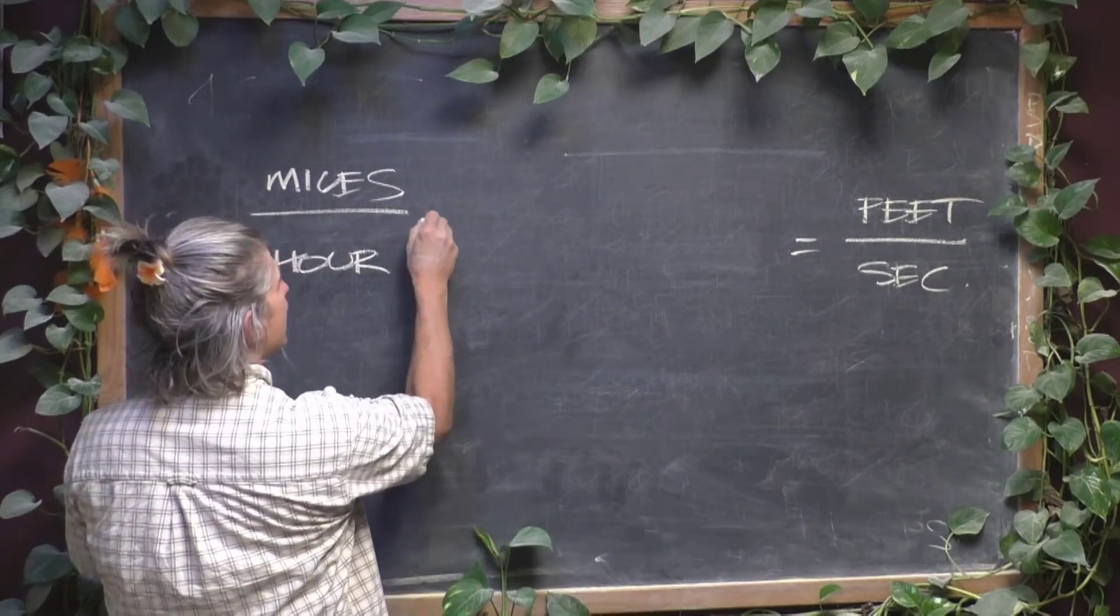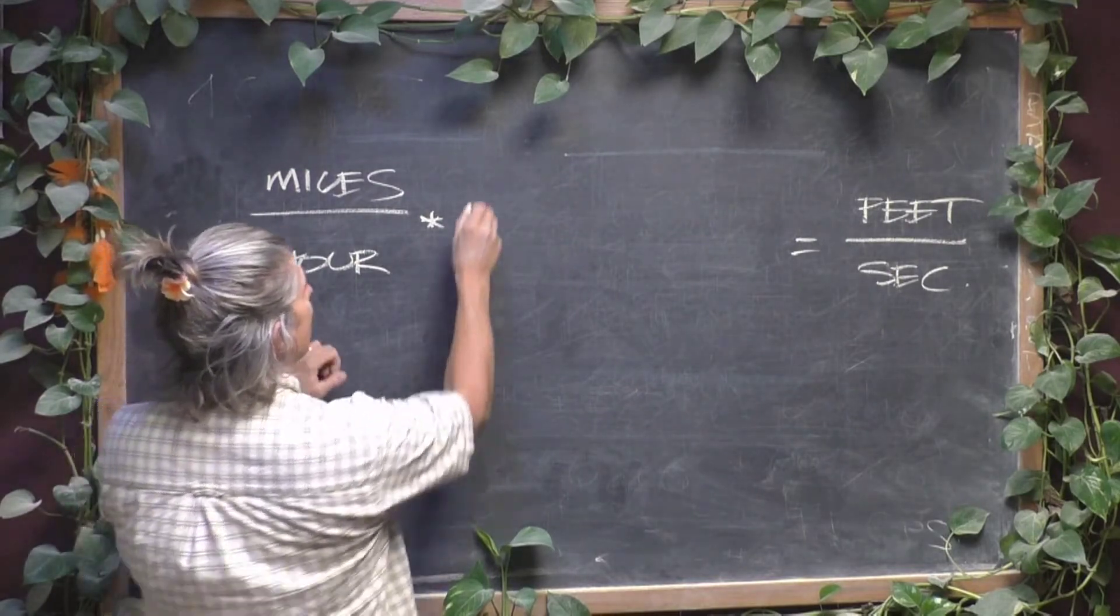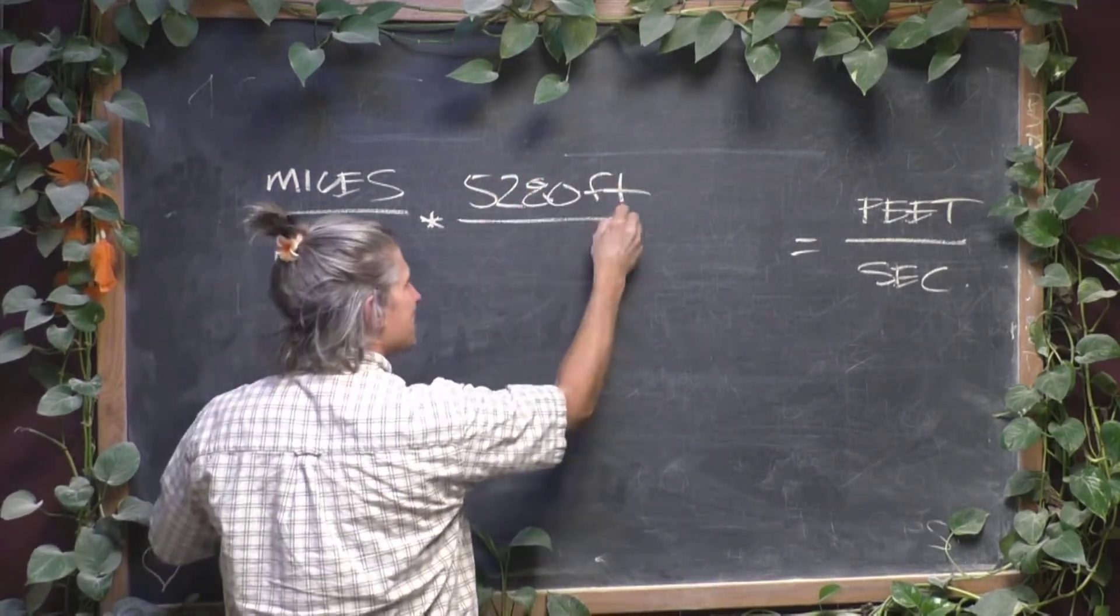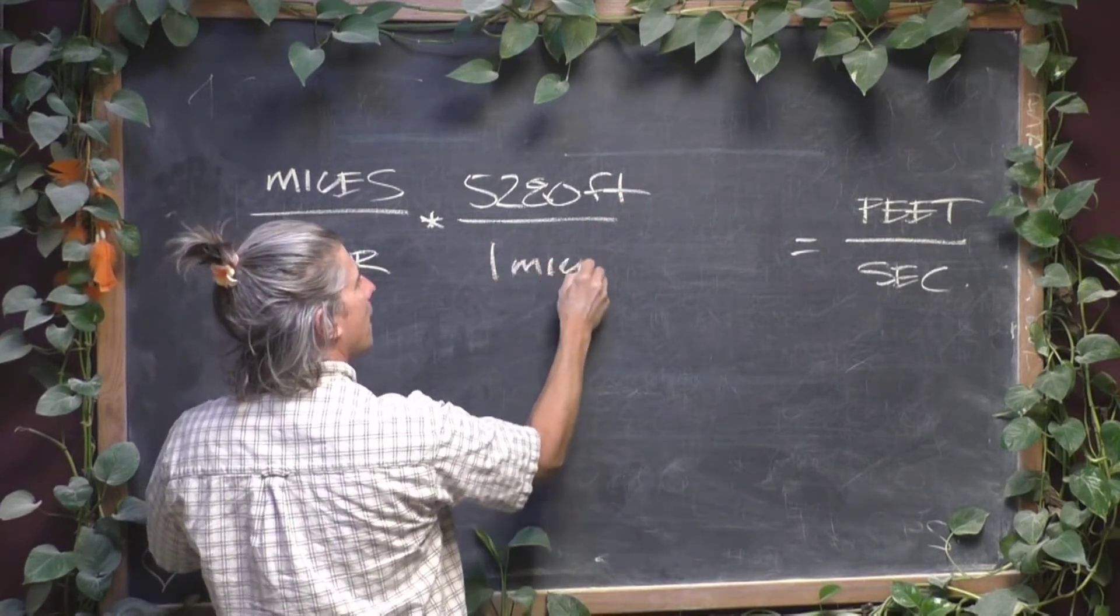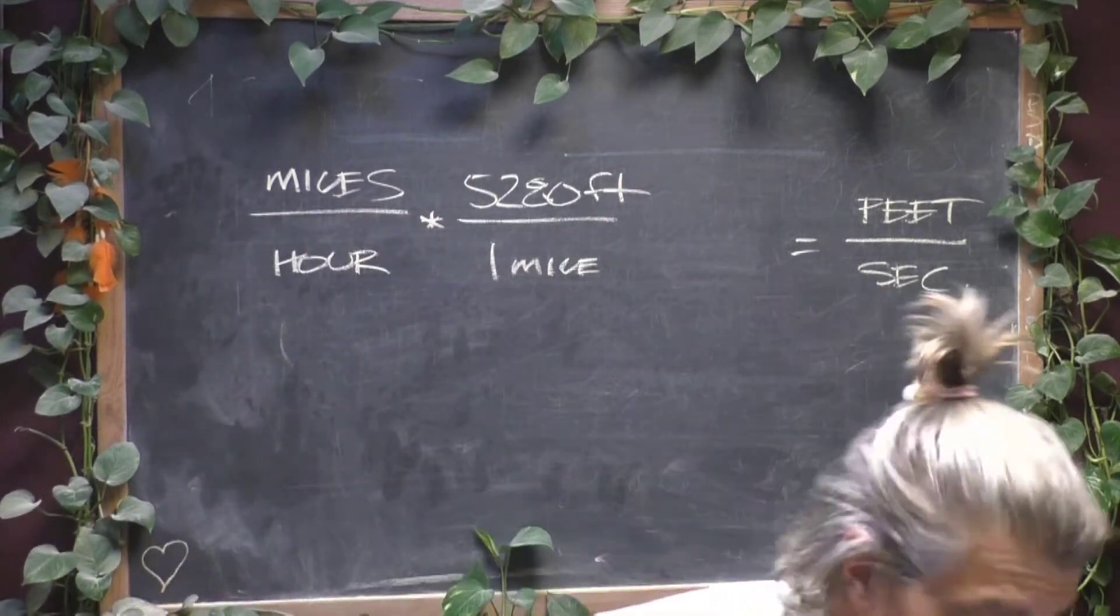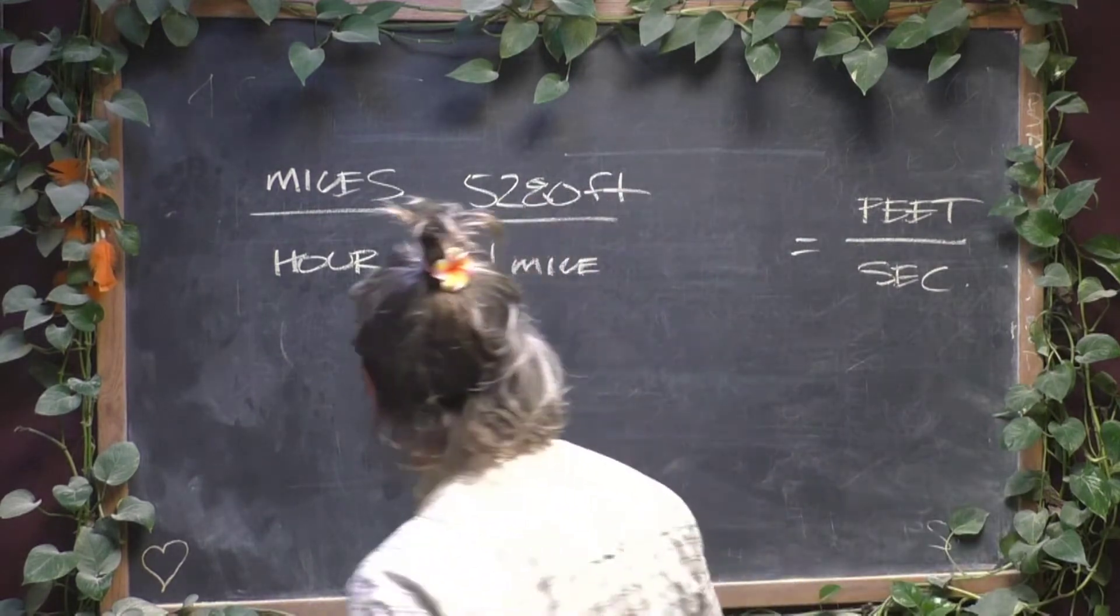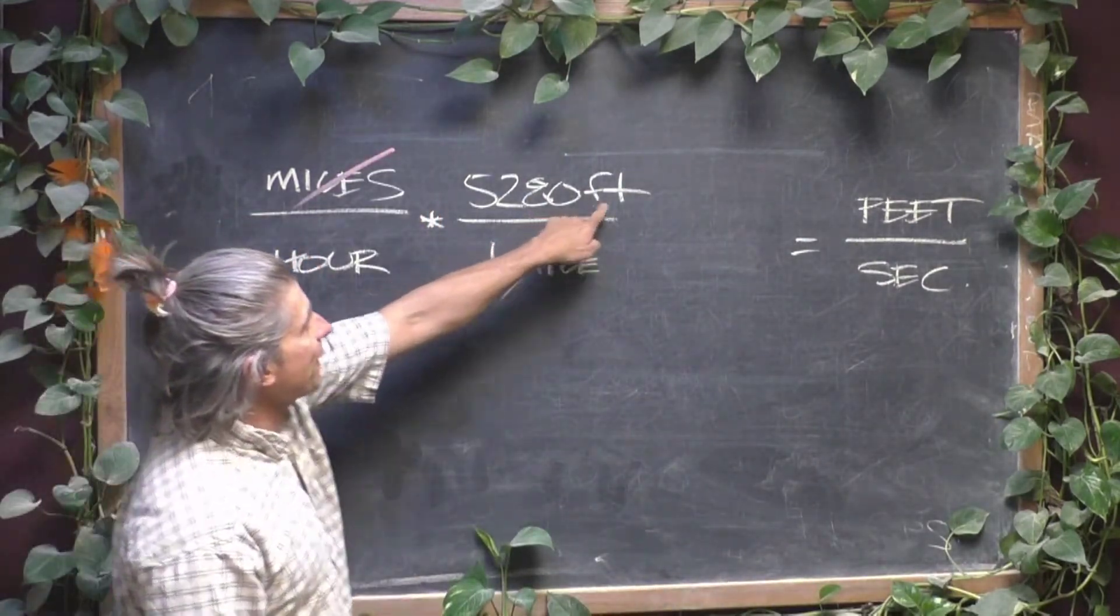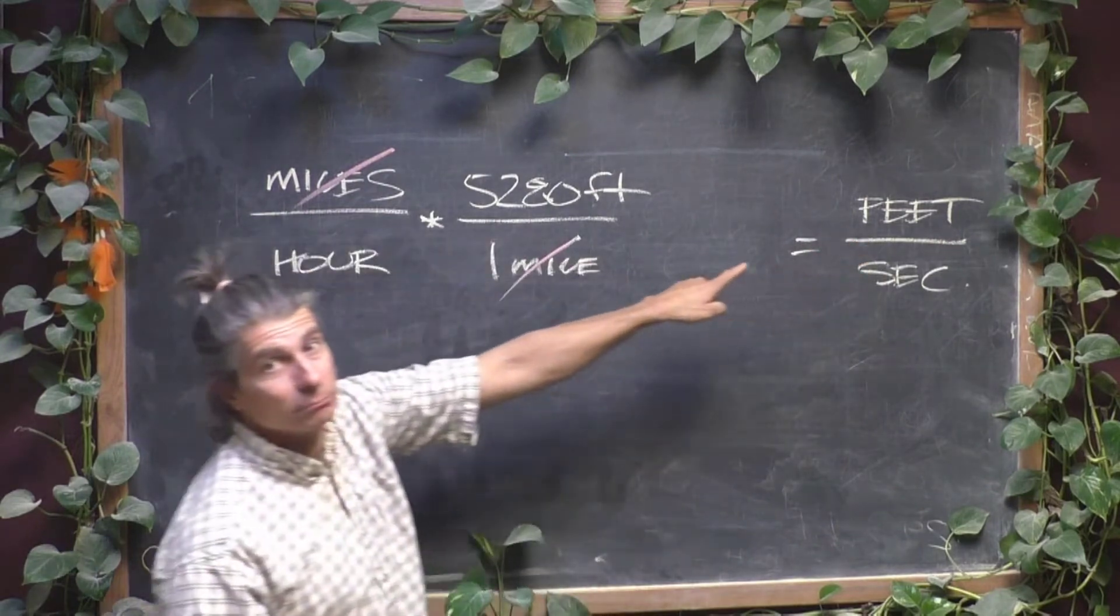First thing we can do is we can multiply by 5,280 feet is equivalent to one mile. So, using the cancellation method, miles goes away and we're left with feet, which is what we want. That's awesome.